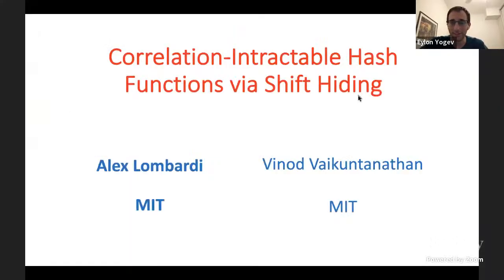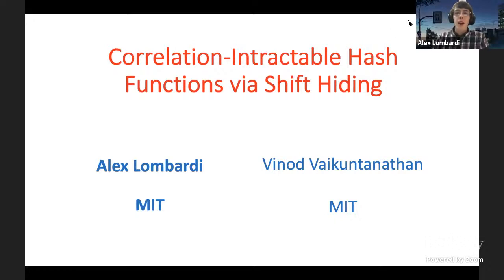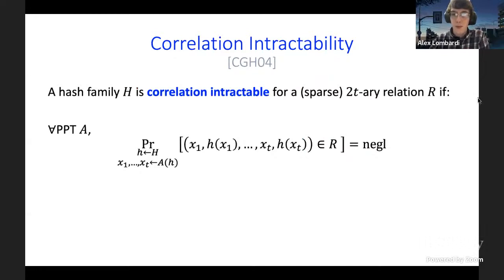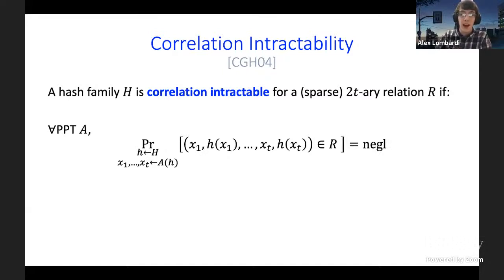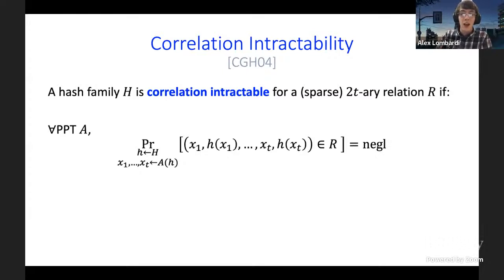Correlation tractability is a very general-purpose security property of a hash function family, parameterized by a relation r taking t inputs x1 through xt and t corresponding outputs y1 through yt. A hash function family H is correlation tractable for r if it is computationally difficult to find an r-correlation in H — meaning it is hard to find inputs x1 through xt such that (x1,...,xt, H(x1),...,H(xt)) satisfies the relation.